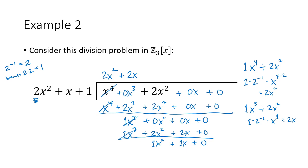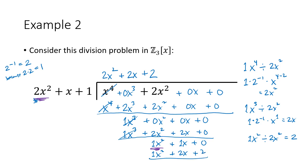We have one more step because our working remainder still has degree 2, equal to the degree of the divisor — it needs to be strictly less than. So 1x squared divided by 2x squared equals 2. Multiplying: 2 times 2x squared is 1x squared, 2 times x is 2x, and 2 times 1 is 2. Subtracting: 1 minus 2 is negative 1, the same as 2 in Z3, giving 2x, and 0 minus 2 is 1. So the final quotient is 2x squared plus 2x plus 2, and the remainder is 2x plus 1.